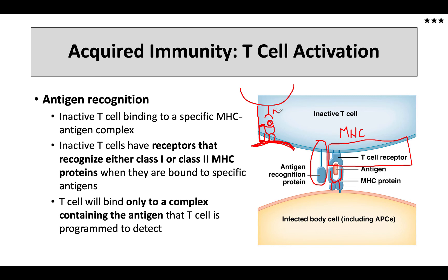We've got my antigen recognition protein — I also like to call it my antigen binding protein, or ABP for short. It is a receptor. When both of these receptors are stimulated at the same time — activation of the T-cell receptor here and activation of the antigen binding protein here — we're going to get a cascade of signaling events within the T-cell, and that process will activate the T-cell.